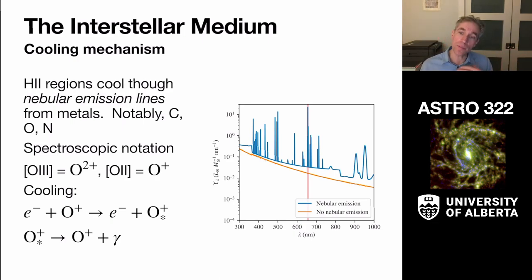Those photons end up leaving the nebula, and they end up taking away radiation with them. And so that ends up cooling them off. But H2 regions also cool through what are called the nebular emission lines.